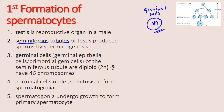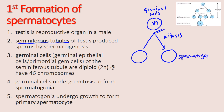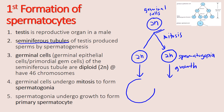So what happens next? This germinal cell will undergo mitosis and will produce two cells known as the spermatogonia. Both of these cells are also diploid, meaning they have 46 chromosomes. Next, these two spermatogonia will undergo growth and form what we call the primary spermatocyte, which is also a diploid cell.